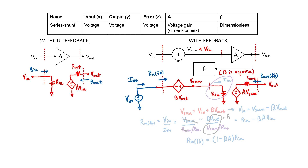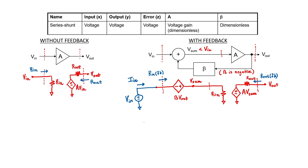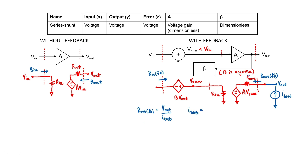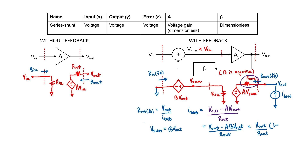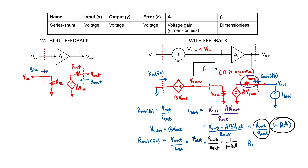Let's now look at the output impedance. When calculating the output impedance of a circuit, we need to turn off the source and attach a test source to the output side. The output impedance is given by the ratio of the output voltage to the test current. We can find the test current by applying Ohm's law to the output resistor. Since the input is now turned off, V_sum is just beta·V_out. Inverting both of these numbers, we conclude that the feedback network has served to lower the output impedance, because A·beta is a negative number.